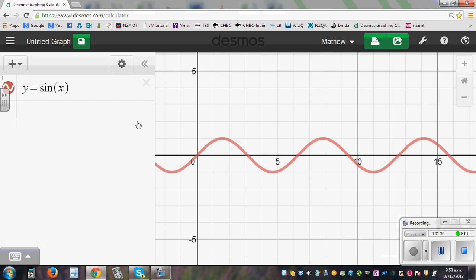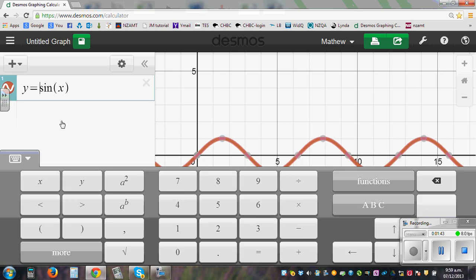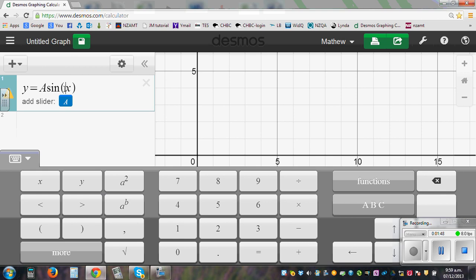So I want to show you that you can add parameters to see the transformation or the translation each of the letters or the parameters make. So let me make it say A is the amplitude. A sine, say B, X. I'll put minus C plus D.